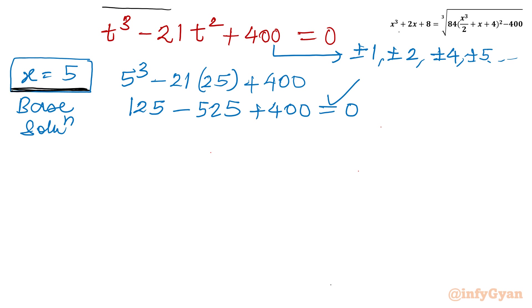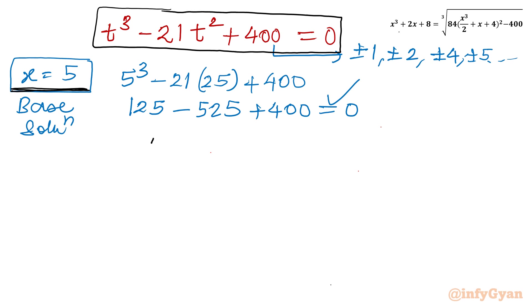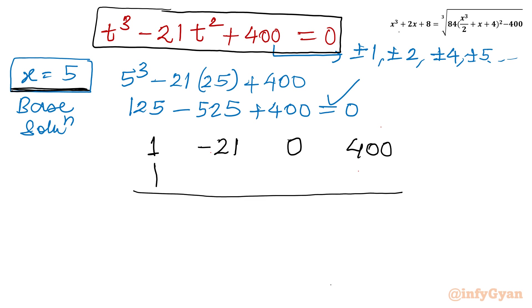Now I will write all the coefficients of the cubic equation. Coefficient of T³ is 1, coefficient of T² is −21, coefficient of T is 0, and the constant term is 400. Using synthetic division with T = 5: leading coefficient 1, then 1×5 = 5, giving −16; −16×5 = −80; −80×5 = −400, giving remainder 0.